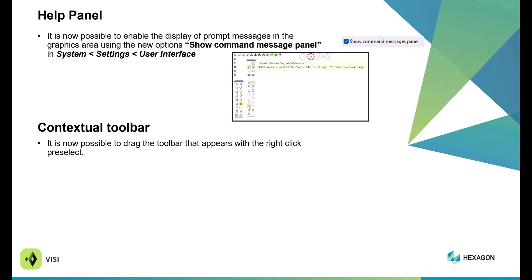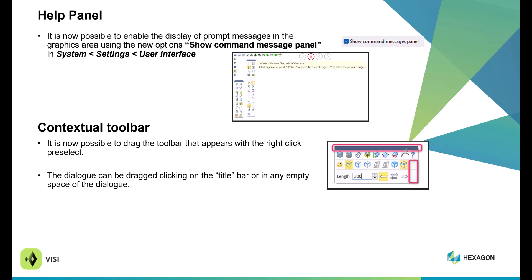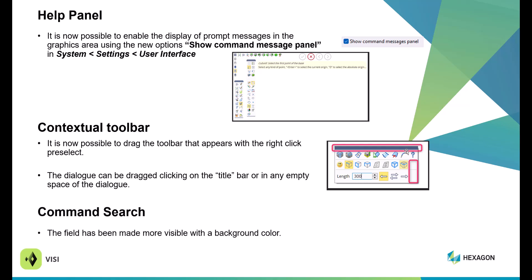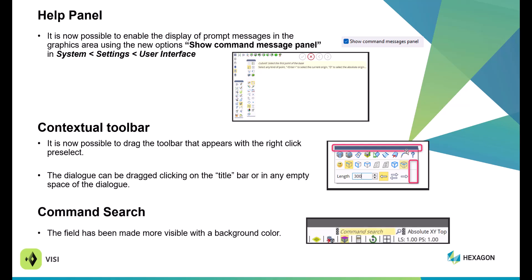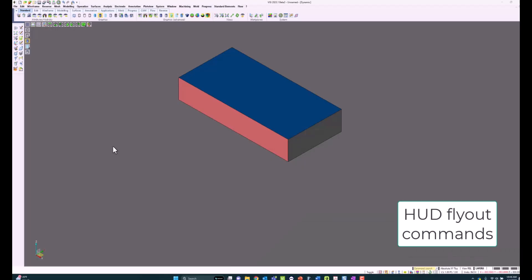Within your context menu, it is possible to drag or right-click to pre-select and move your contextual icon bars. You can also pick an empty part of the toolbar to move it, as well as via a blue ribbon bar. Within the command search, it has become more visible — there's a highlight on the command search bar, so if you don't know where a command is, you can always search for it.